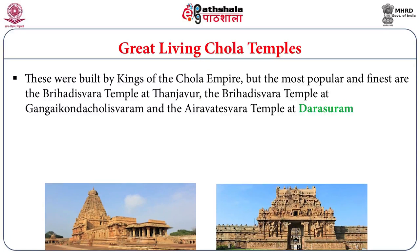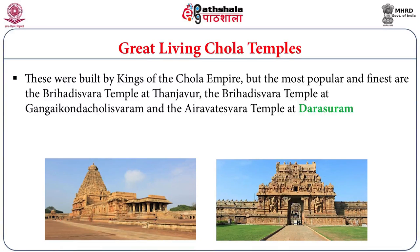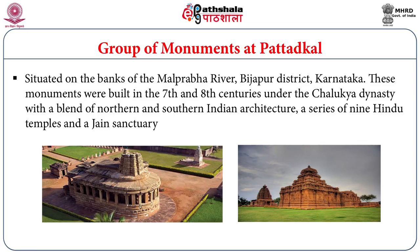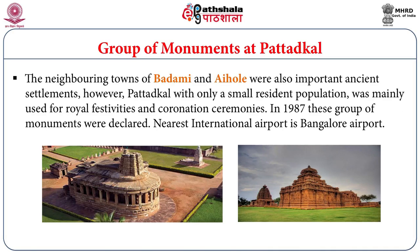The Great Living Chola Temples include the Brihadeeswarar Temple at Thanjavur, the Gangaikondacholapuram, and the Airavatesvara Temple at Darasuram. The Brihadeeswarar Temple was inscribed in the year 1987 and extended in the year 2004 to include other monuments. The second World Heritage Site in Karnataka is the Group of Monuments at Pattadakal, which is visited by many international tourists. It was inscribed in the World Heritage list in the year 1987, and the closest airport is Bangalore airport.